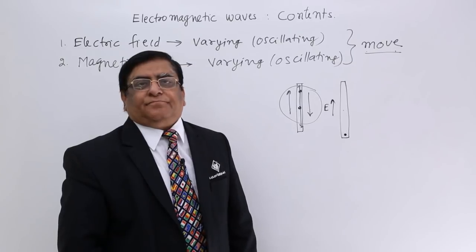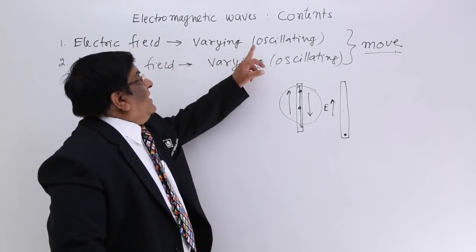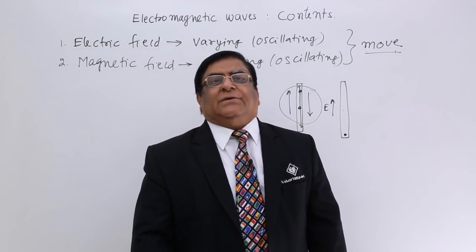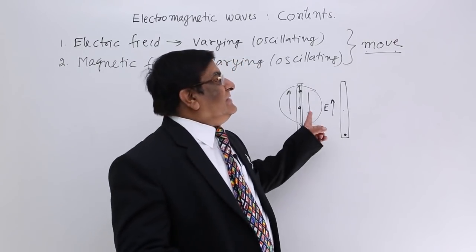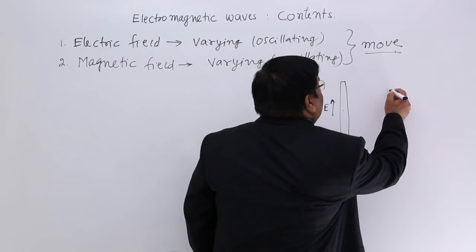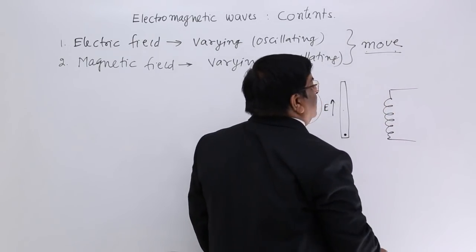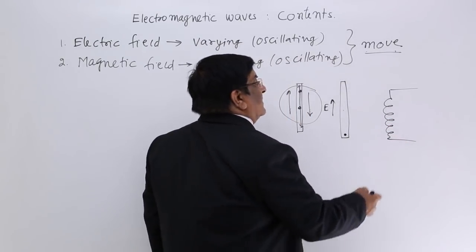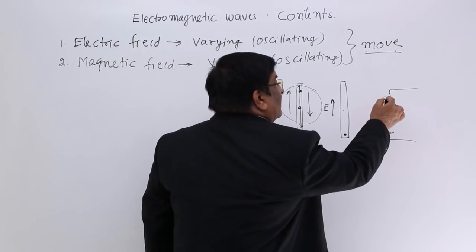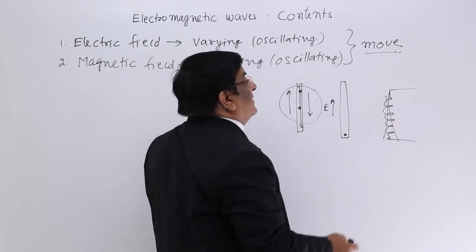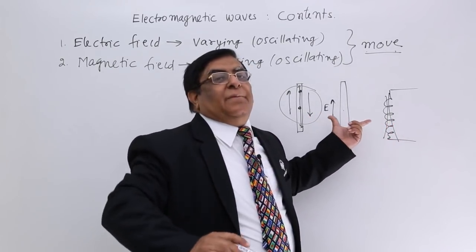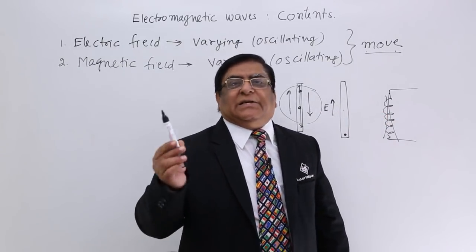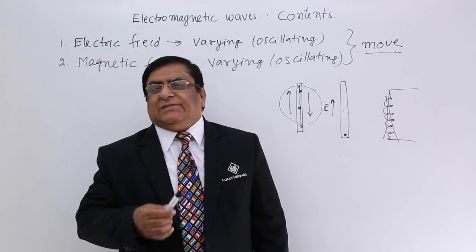So electromagnetic wave is a varying electric field and a varying magnetic field, because a varying electric field always creates a varying magnetic field. Like an inductor, we see a magnetic field is created, and that magnetic field creates an EMF. So that magnetic field also behaves as if it is oscillating, and these two things happening together at any one location proves that there is a wave carrying both electric field and magnetic field.